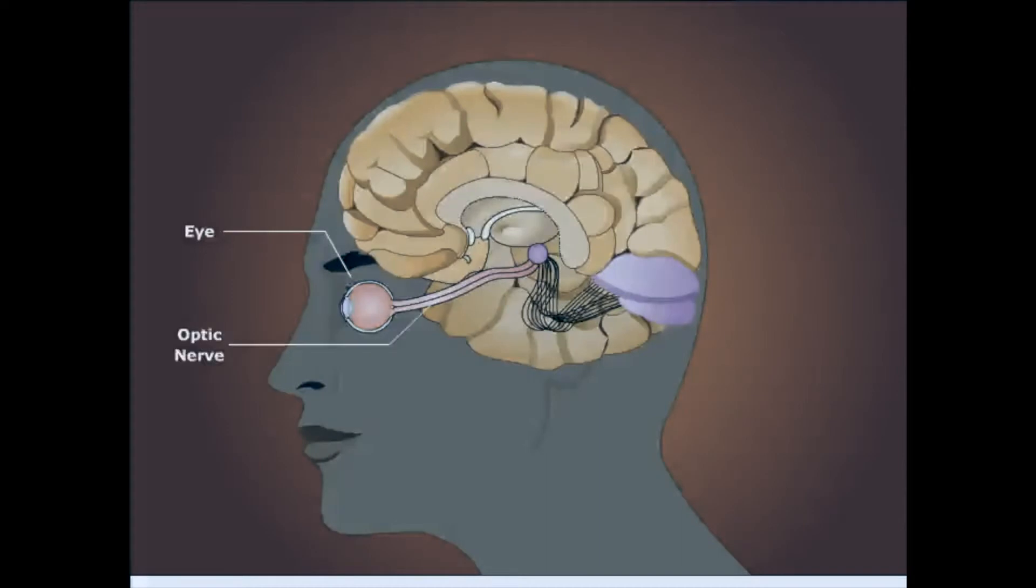The electrical impulses travel via the optic nerve, passing through the optic chiasm and the optic tract to reach the lateral geniculate nucleus of the thalamus. It then continues through the optic radiation to ultimately reach the primary visual cortex in the occipital lobe.